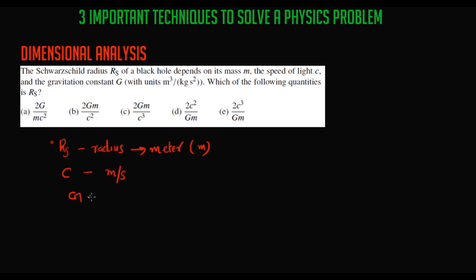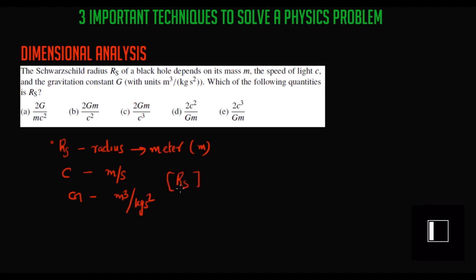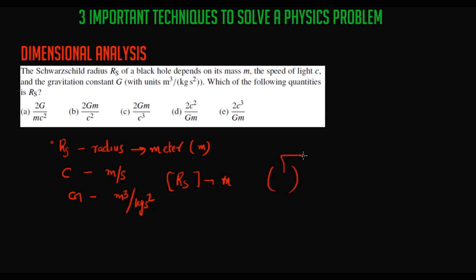The gravitational constant has a unit of meter cubed per kilogram second squared. By dimensionality, RS must have units of meter. We check the options — starting with Option A: 2GM over MC squared, or 2G over MC squared.